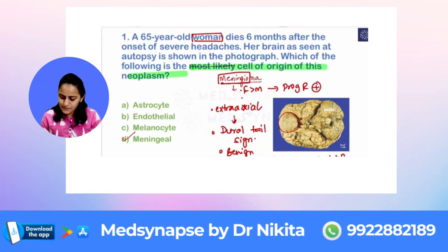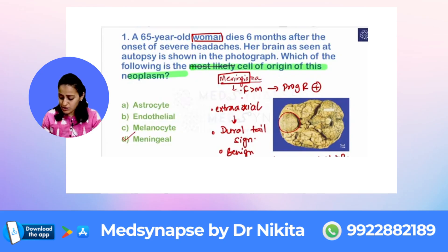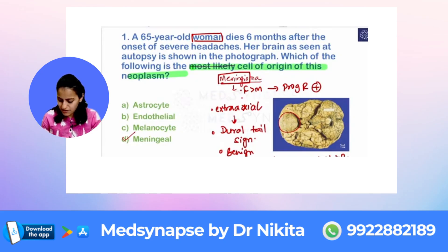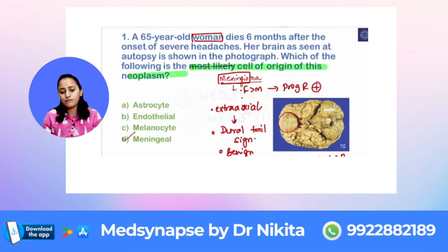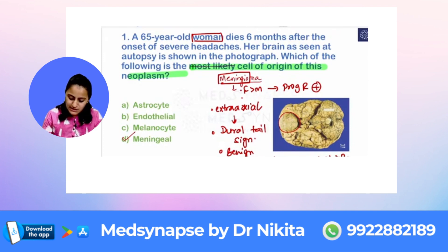It also shows calcification — psammoma bodies are seen here. Psammoma bodies are also seen in papillary thyroid tumor, ovarian serous tumors, and mesothelioma. The answer for the cell of origin: meningeal arachnoid cell is the cell of origin for meningioma. Astrocyte is for glioma, and endothelial cells are for vascular tumors.